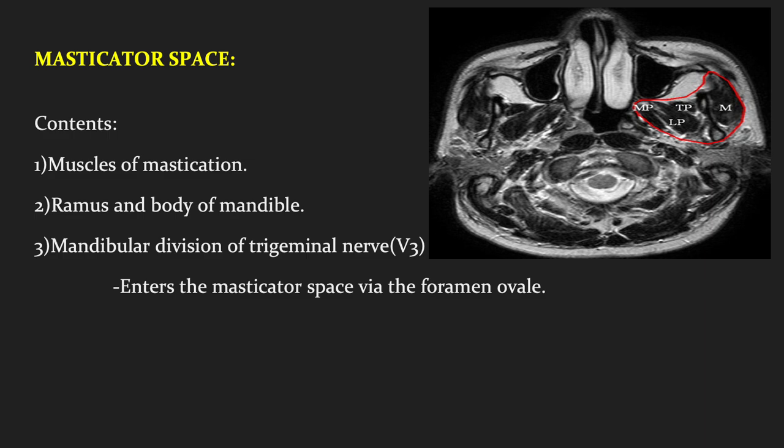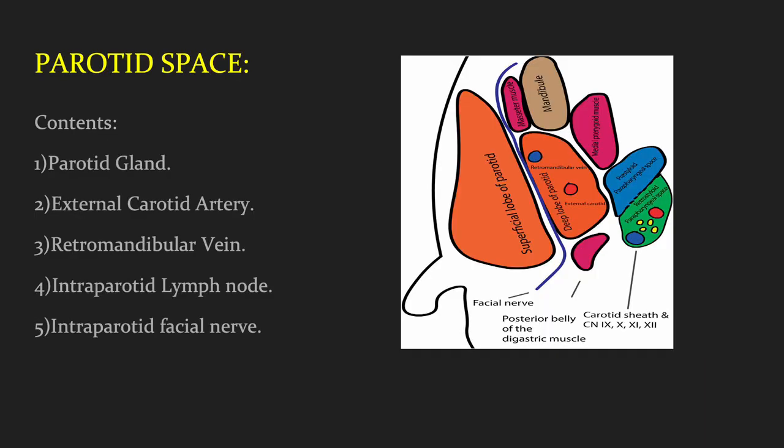Now we will discuss in brief about each neck space. The masticator space is exclusive for the suprahyoid neck level and consists of the muscles of mastication, ramus and body of mandible, and the mandibular division of the trigeminal nerve as its contents. The parotid space consists of the parotid gland with its superficial and deep lobe, along with the external carotid artery, retromandibular vein, intraparotid lymph nodes, and the facial nerve traversing between the superficial and deep lobe of the parotid gland.